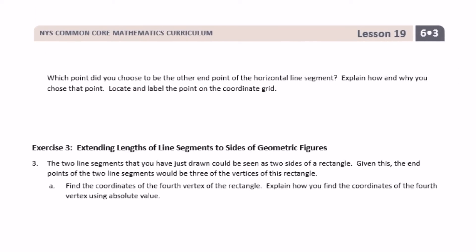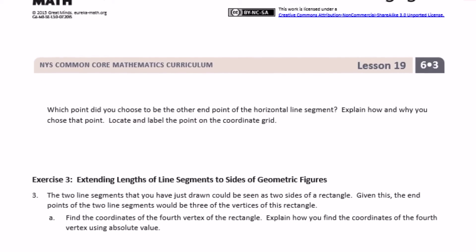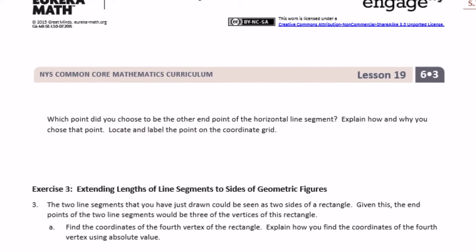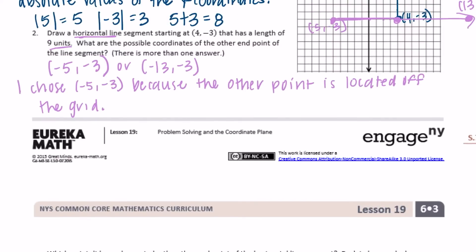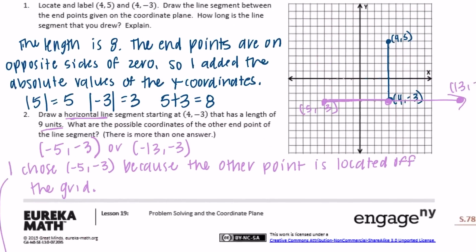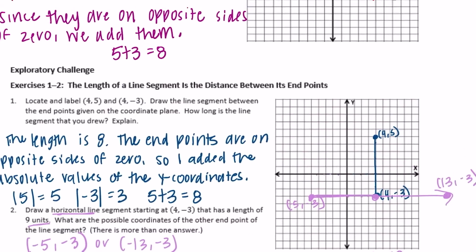Which point did you choose to be the other endpoint of the horizontal line segment? Explain how and why you chose the point, and locate and label it on the coordinate grid. We actually already did all that, so you can write that down — we've already located and labeled it.